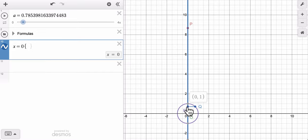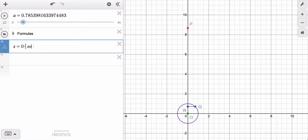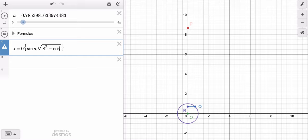I want to go from the height of R, in my case the height of R is the sine of A, and I want to go up to the height of P. In my case, that is the square root of 8 squared minus the cosine squared of A, plus the sine of A.